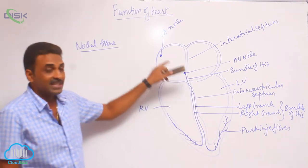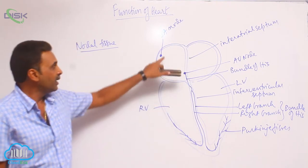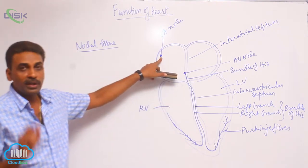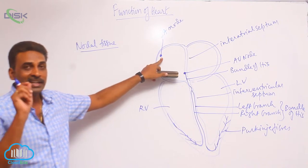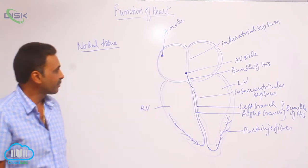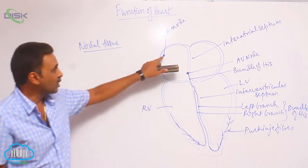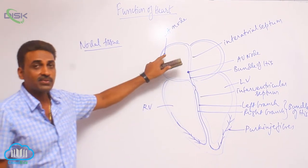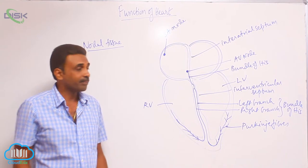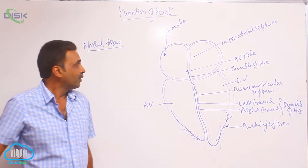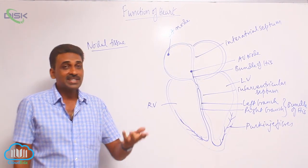SA node is the principal pacemaker. SA node initiates nerve impulses — the nerve impulses are generated by the SA node. That is why the SA node is regarded as the pacemaker. A pacemaker is something which initiates the heartbeat.